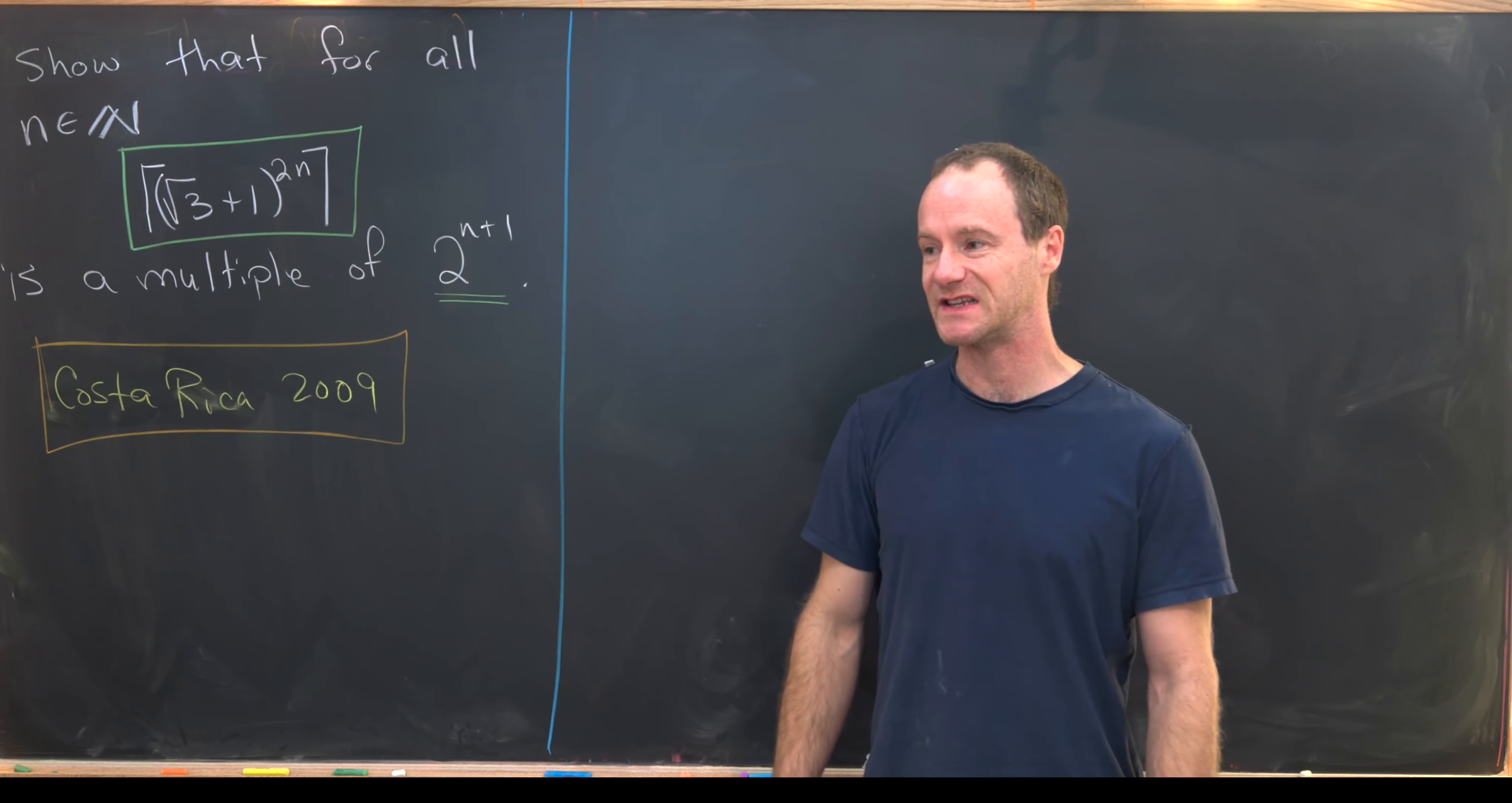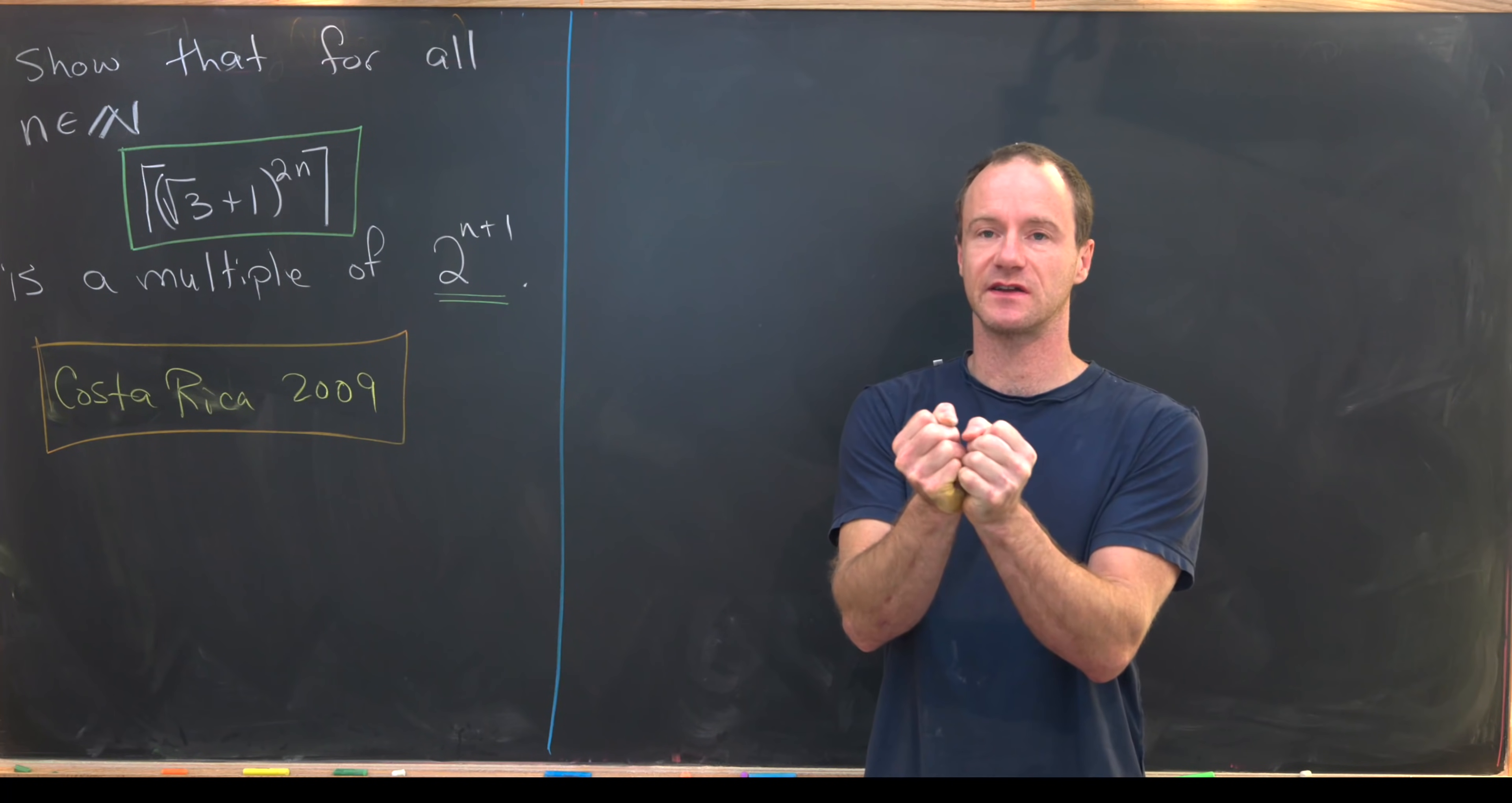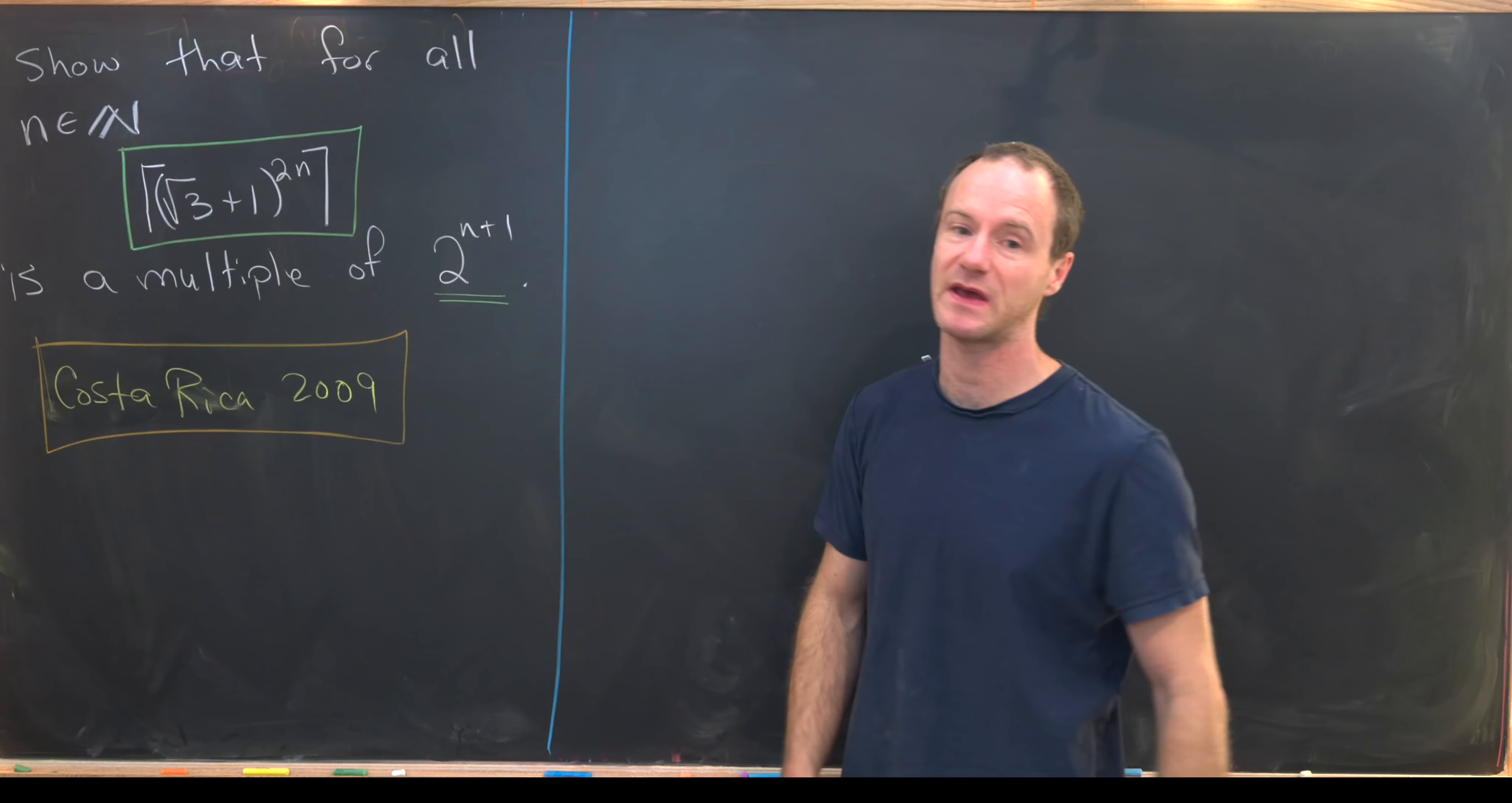So let's just recall that the ceiling function takes a real number and goes to the next integer. So if you're already at an integer, you stay at that integer. So the ceiling of 5 would be 5, but the ceiling of 5.7 would be 6. You go upstairs. It's like an elevator up. So I've got a bunch of videos about the floor function. That's like an elevator down. This is like a companion to that.